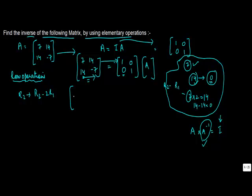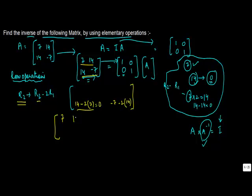Applying R2 = R2 - 2R1: the element 14 becomes 14 minus 2 times 7, which is 0. This operation has to be applied to each element of R2, so the second element becomes -7 minus 2 times 14, which gives -35. So the first row remains [7, 14] and the new second row is [0, -35].